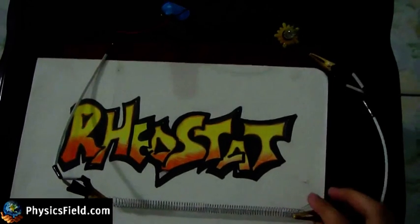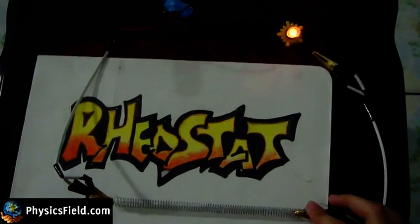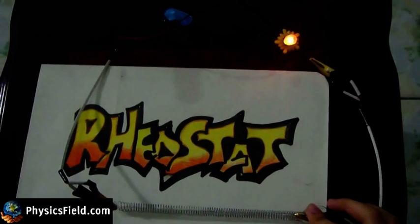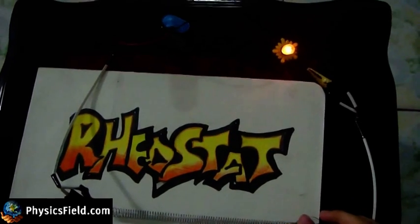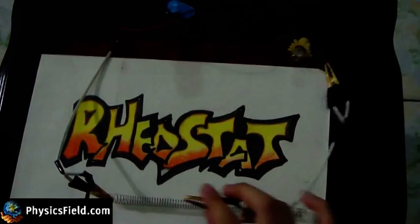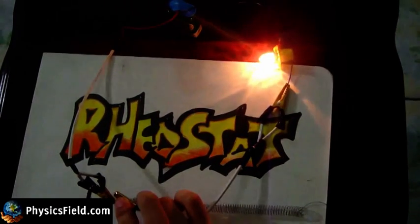When we place it at the longest point, the light seems to light up dimly. But when we place it at the shortest distance, the light bulb lights brightly.